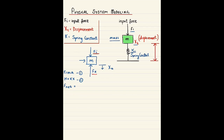We know fi is going downward and fk is going upward. Always remember: fi is our original force and fk is our reactive force. Any reactive force in the same direction as the original force is added; any force in the opposite direction is subtracted. So we write: f_net equals fi minus fk — equation three.